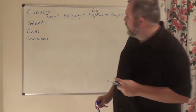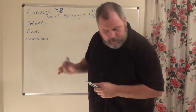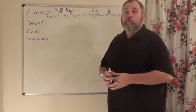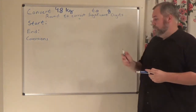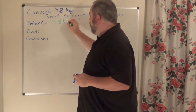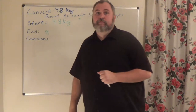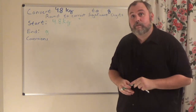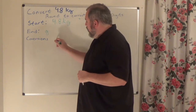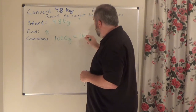Now we're doing 4.8 kilograms to grams. Where am I starting? 4.8 kilograms. What's my game plan? I'm trying to go to grams. Pause the video if you need to find your conversion factors. I know that 1,000 grams is equal to 1 kilogram.